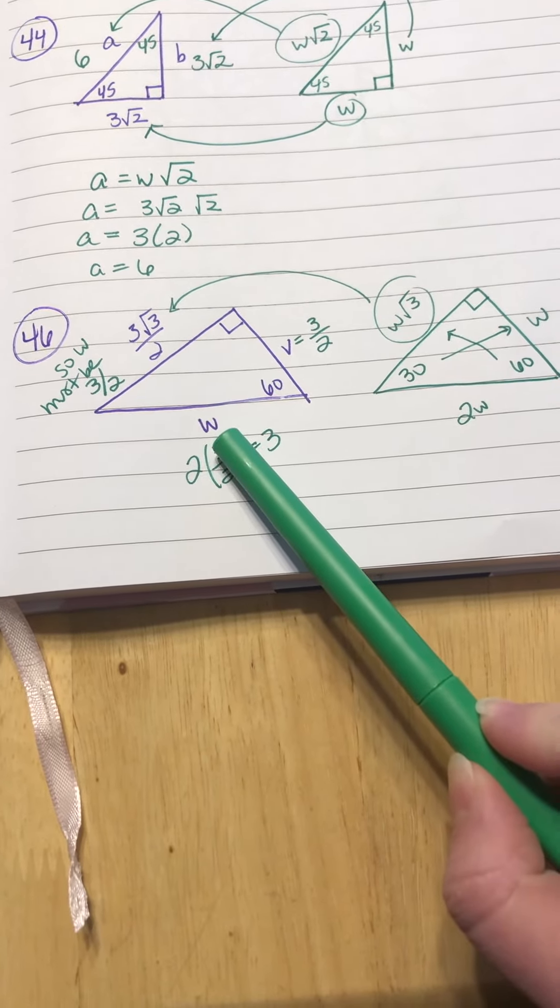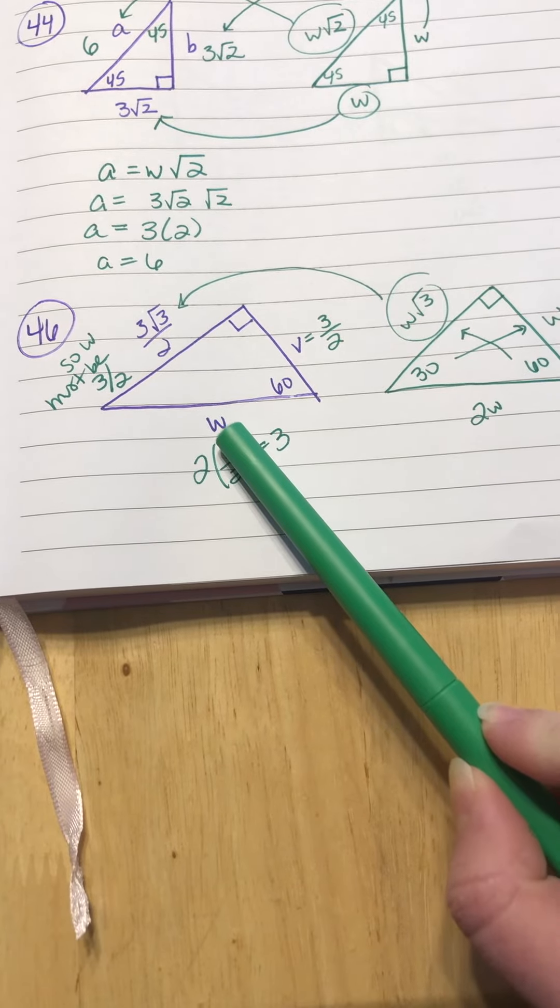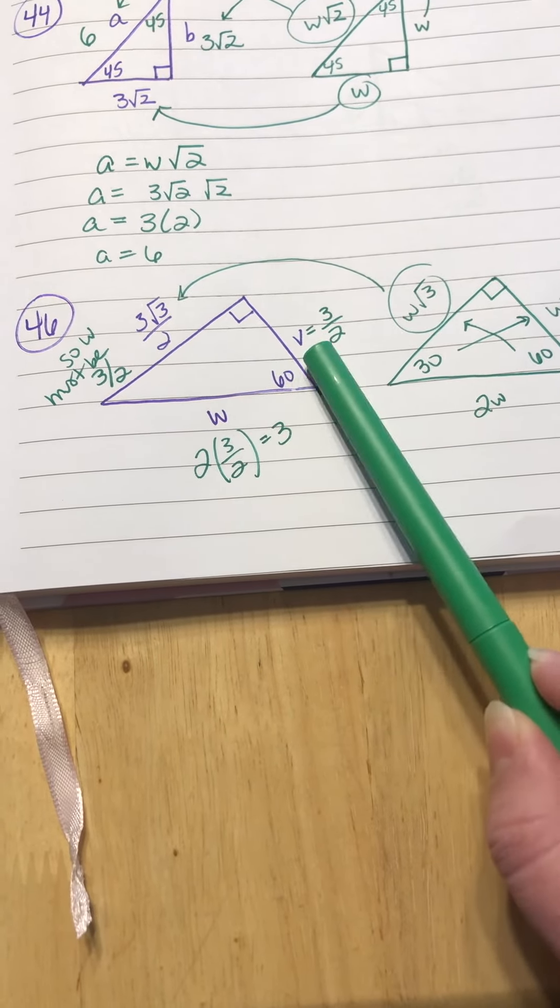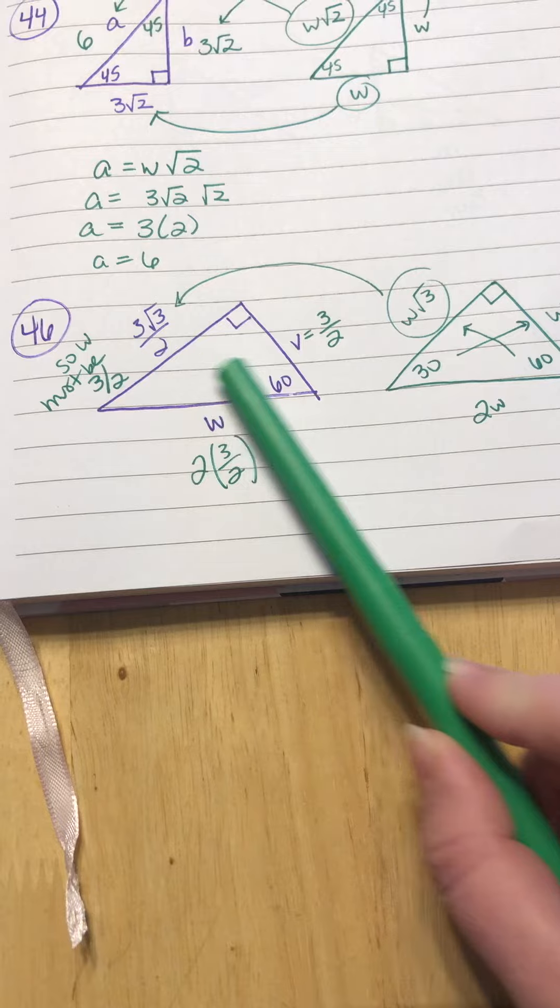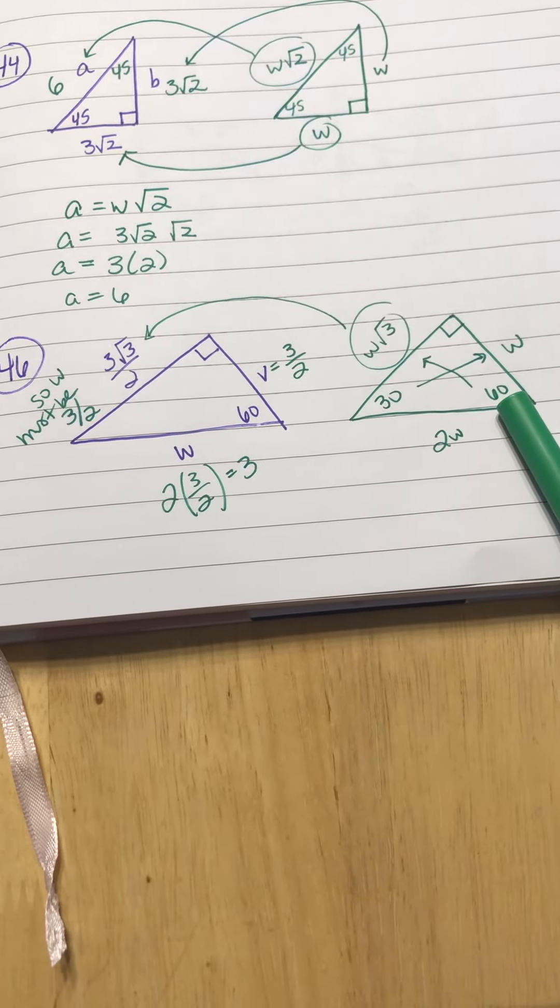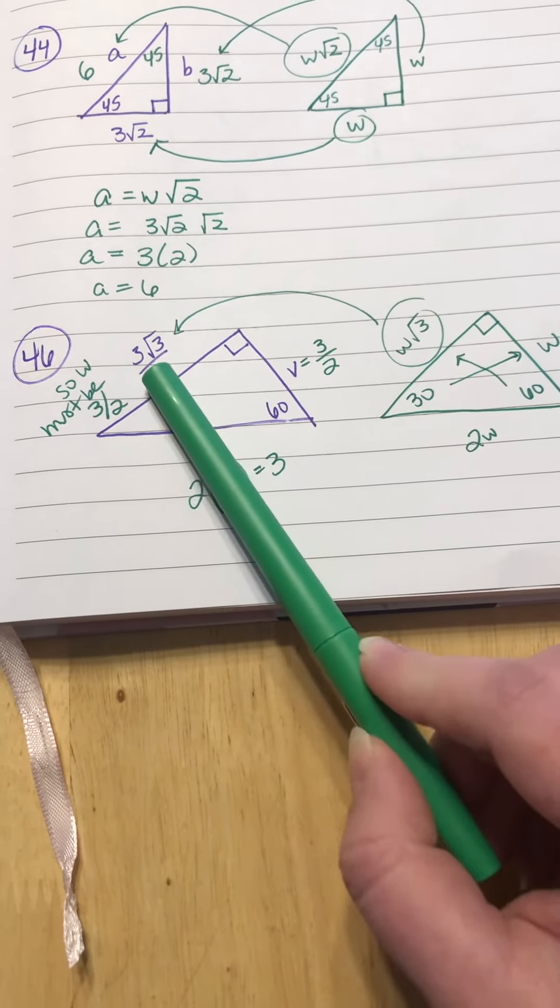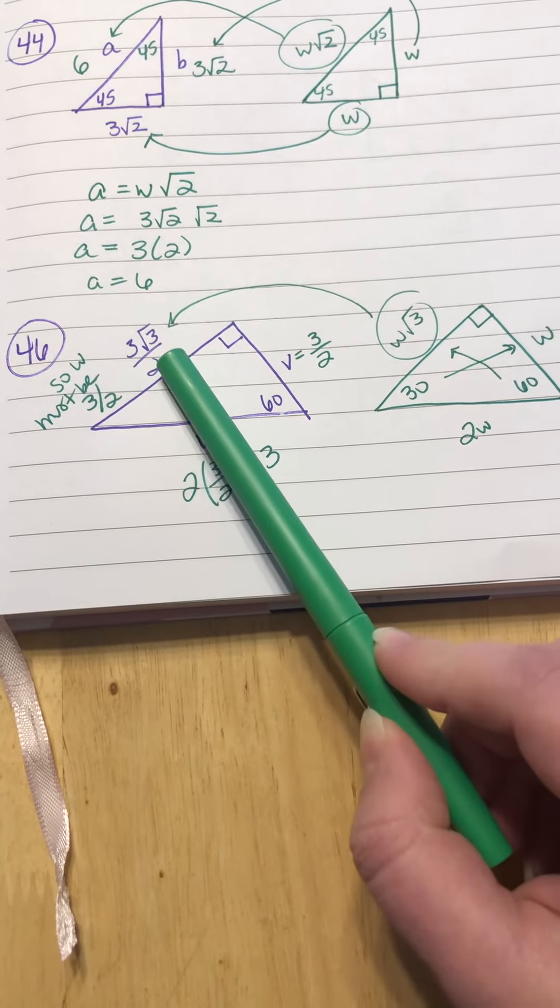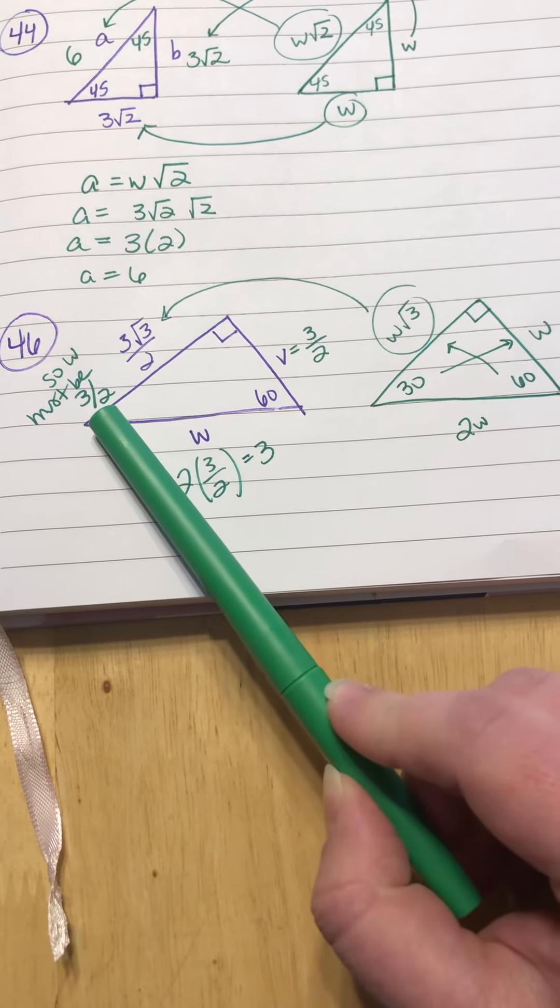They've got, ignore the fact they're using W, they're just trying to throw you off, but W and V are the letters that are missing, and then they give you this side. We know across from 60 is supposed to be W square root of 3. So if it's 3 over 2 times square root of 3, 3 over 2 has to be your W.